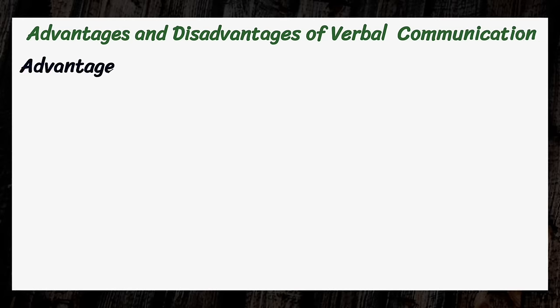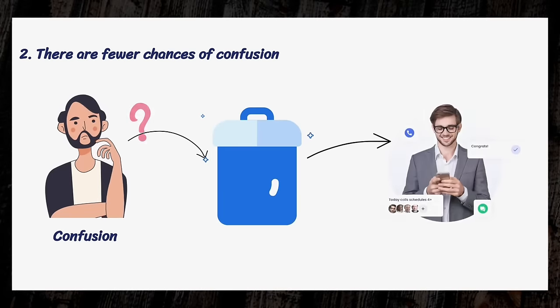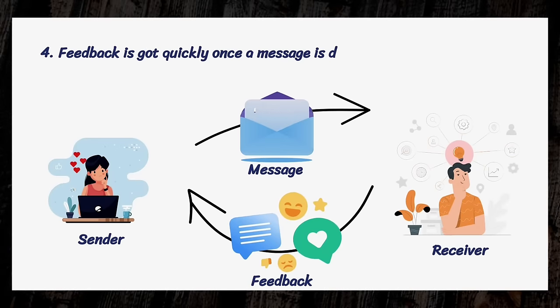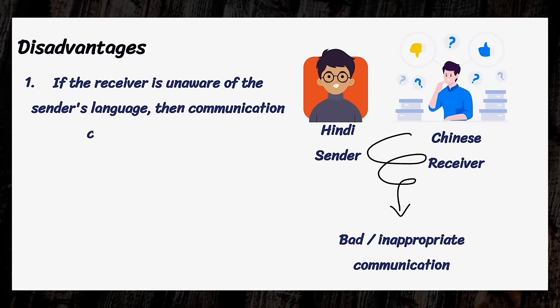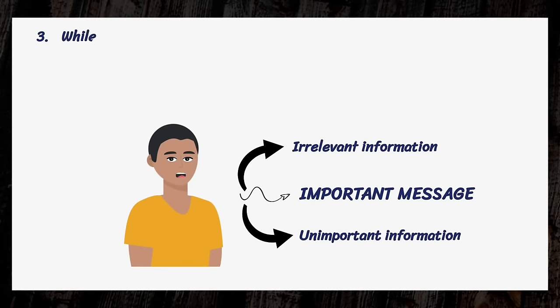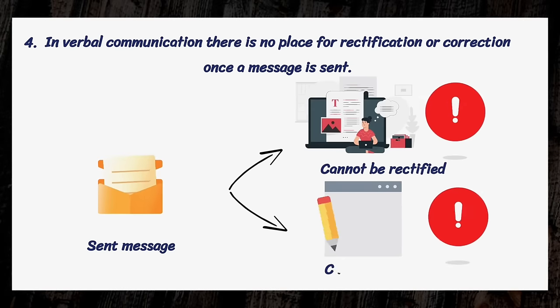Now let's discuss some advantages and disadvantages of verbal communication. Advantages: it saves a lot of time, money, and energy. There are fewer chances of confusion because of the clarity of the method. The information conveyed is easy to understand, as doubts are cleared immediately. Feedback is obtained quickly once a message is delivered. It is a very reliable form of communication. Disadvantages: if the receiver is unaware of the sender's language, communication cannot be carried out. This form is not suitable for lengthy messages. While conveying messages orally, irrelevant and unnecessary information may get included. There is no place for rectification or correction once a message is sent.